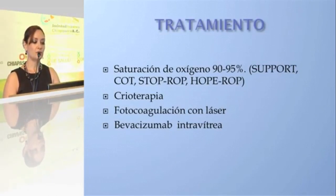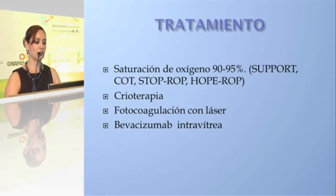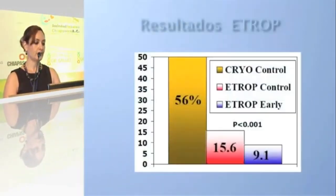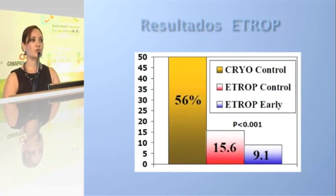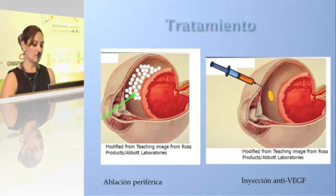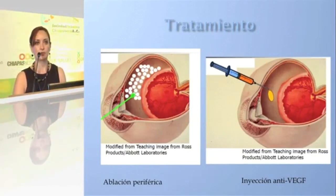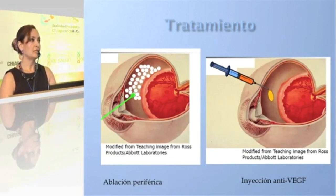Current treatment includes: maintaining oxygen saturation between 90 and 95%, supported by studies such as SUPPORT, CORT, STOP-ROP, and HO-PROP; cryotherapy; laser photocoagulation; and intravitreal bevacizumab injection. ETROP results show that early detection and treatment, compared to CRYO-ROP controls, demonstrated a statistically significant difference in outcomes for patients who received early treatment. Treatment options include peripheral ablation, laser depending on the stage, and currently anti-VEGF antibody injection directly intravitreally to halt retinopathy progression.